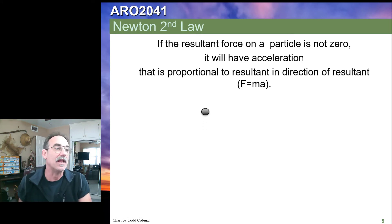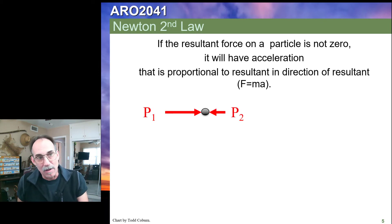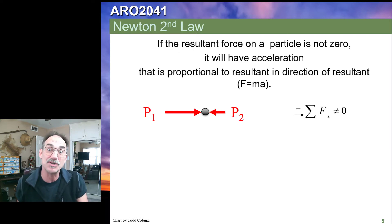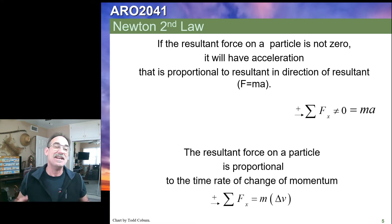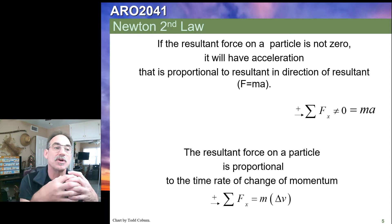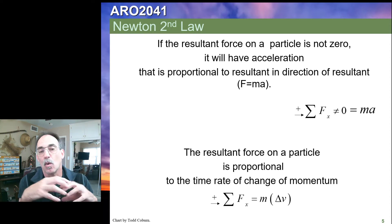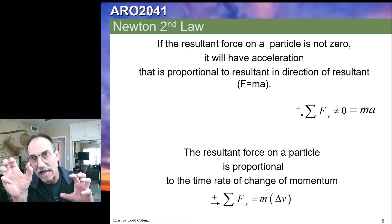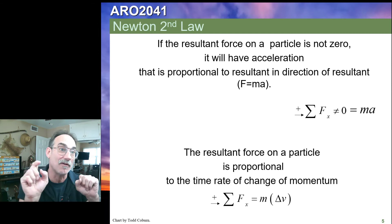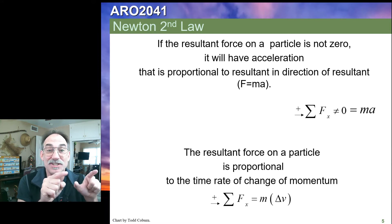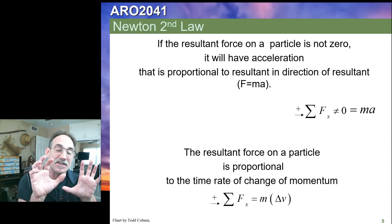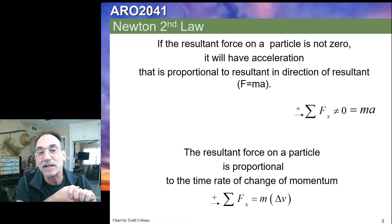If we have this particle and apply a force to it where one force is larger than the other, we sum forces in the horizontal direction, find they don't sum to zero, hence it equals ma and we get an acceleration equal to that imbalance. The resultant force on a particle is proportional to the time rate of change of momentum — the sum of forces equals m times change in velocity, which is just another word for acceleration. We will study this principle of sum of forces equal to ma in dynamics — it's not a statics principle, it's a dynamics principle, and we have an entire class on that.